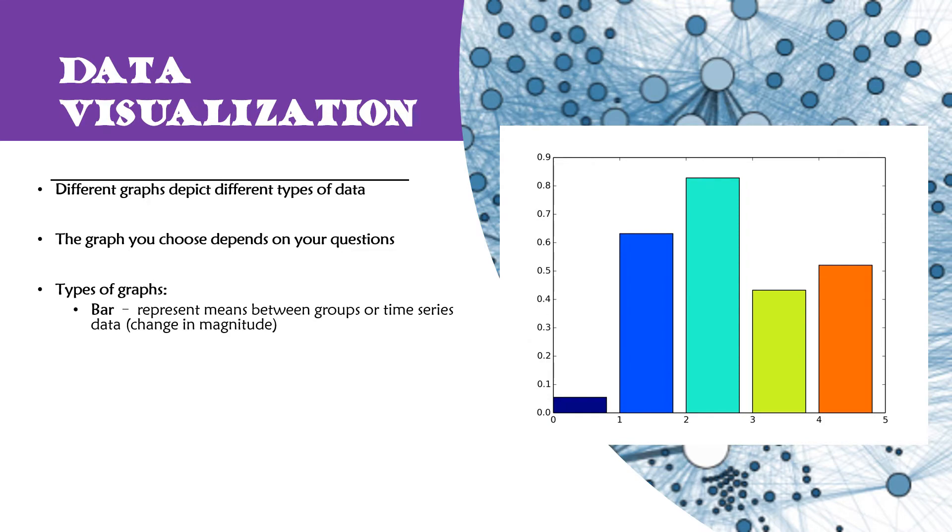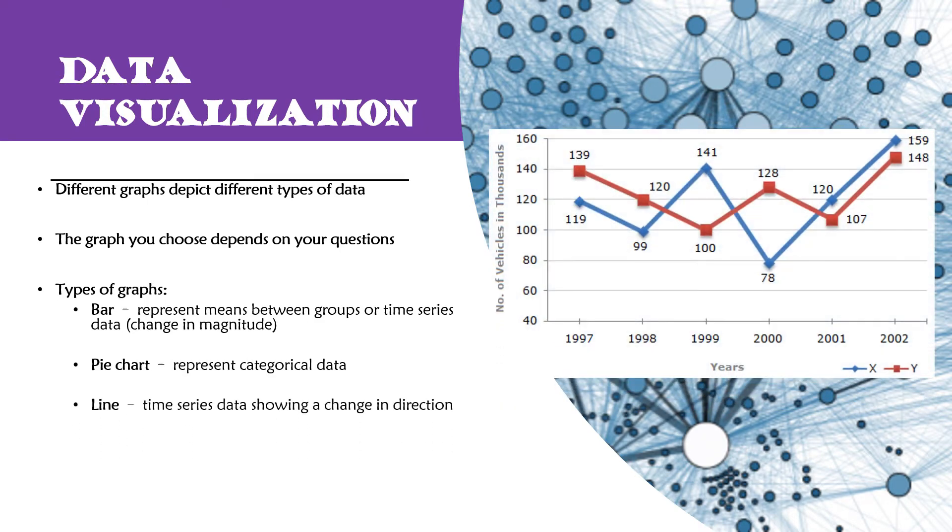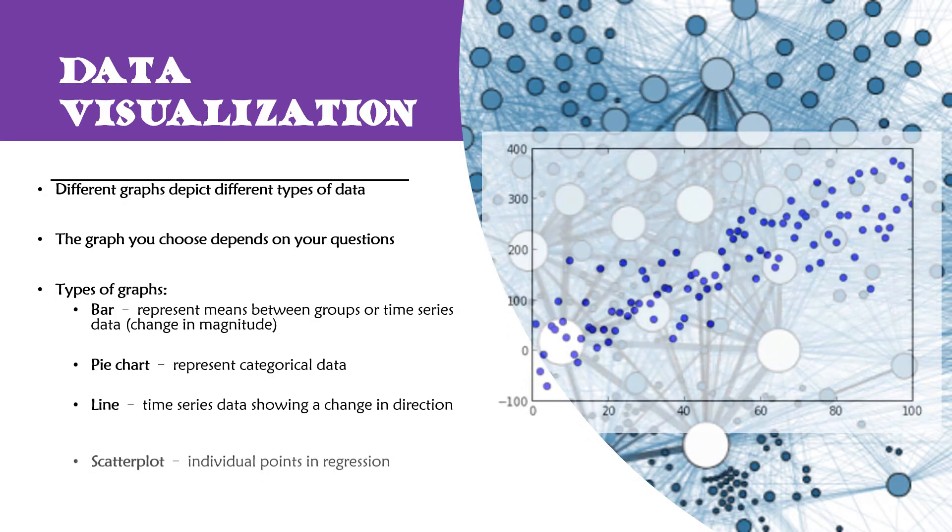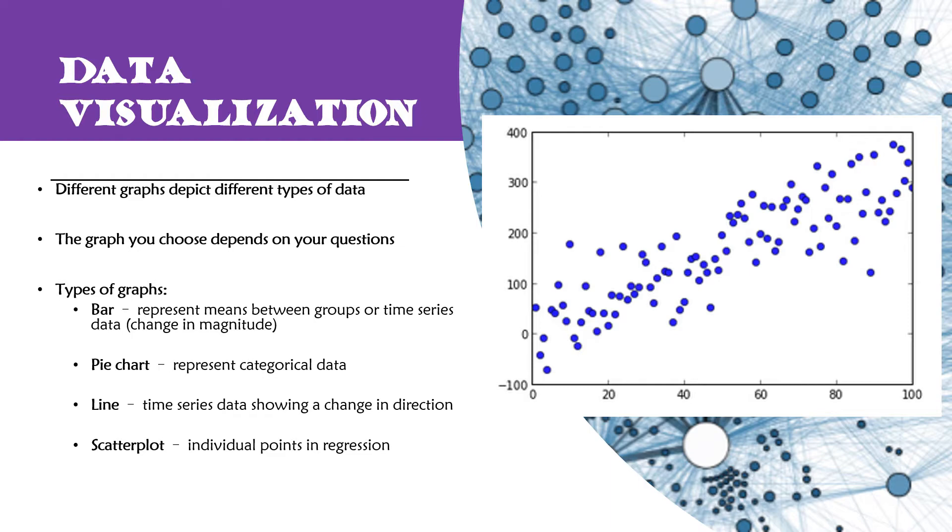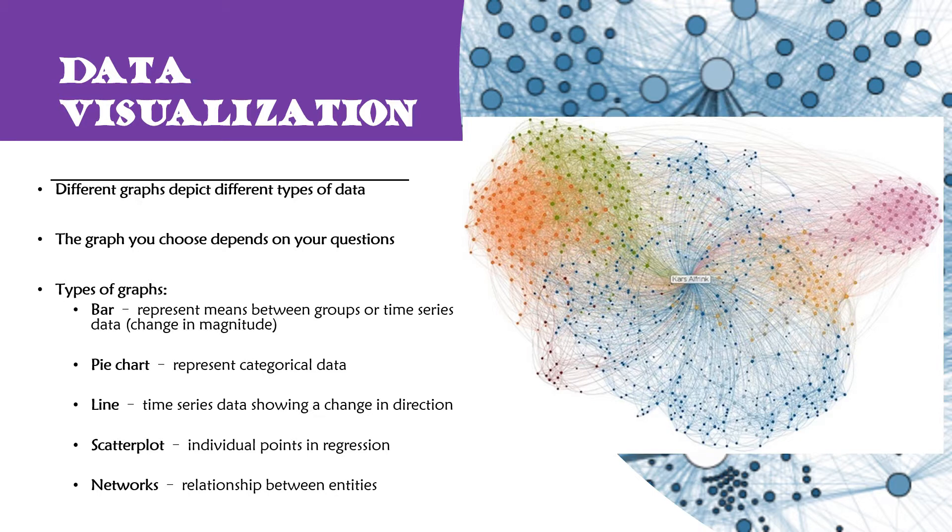There are many types of graphs. One of which is a bar graph that is used to represent means between groups or even time series data. There's also pie charts that represent categorical data. Line graphs generally represent time series data that shows a change in direction. Scatter plots, these are individual points in a regression and then you fit a best fit line showing a trend. And then of course the most complex in my opinion are networks. These can be huge. I mean, the amount of work that goes into getting the data for networks is insane. But a network is just showing relationships between entities as shown in this picture here.